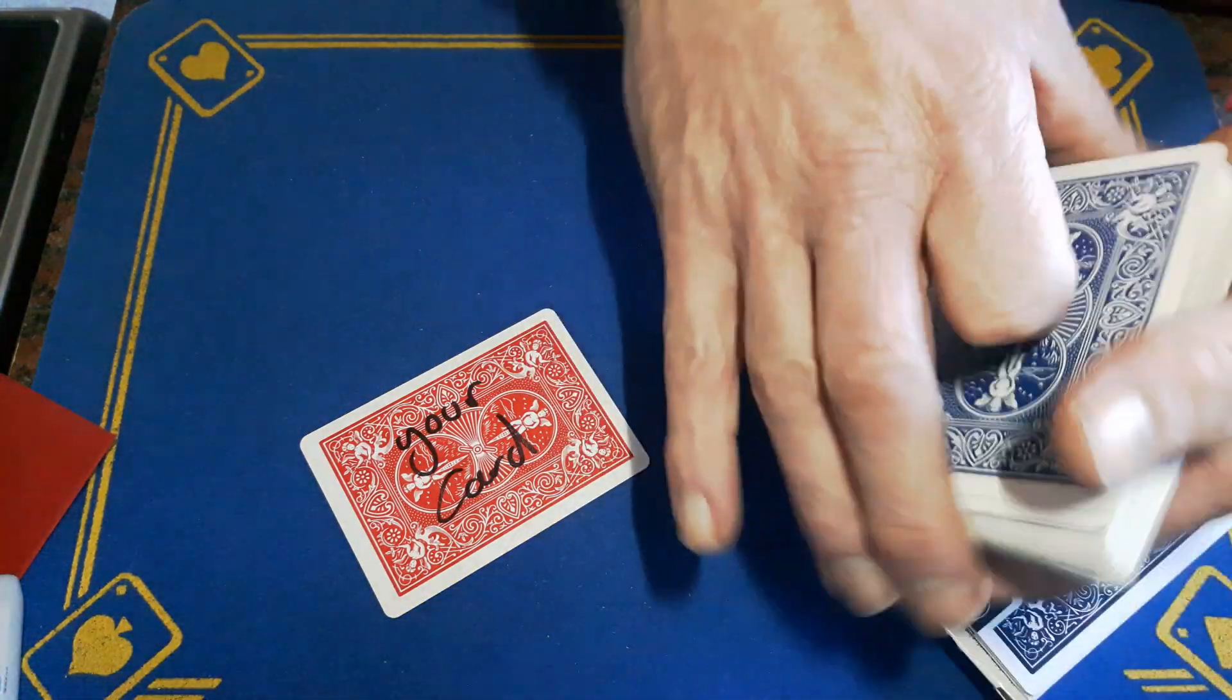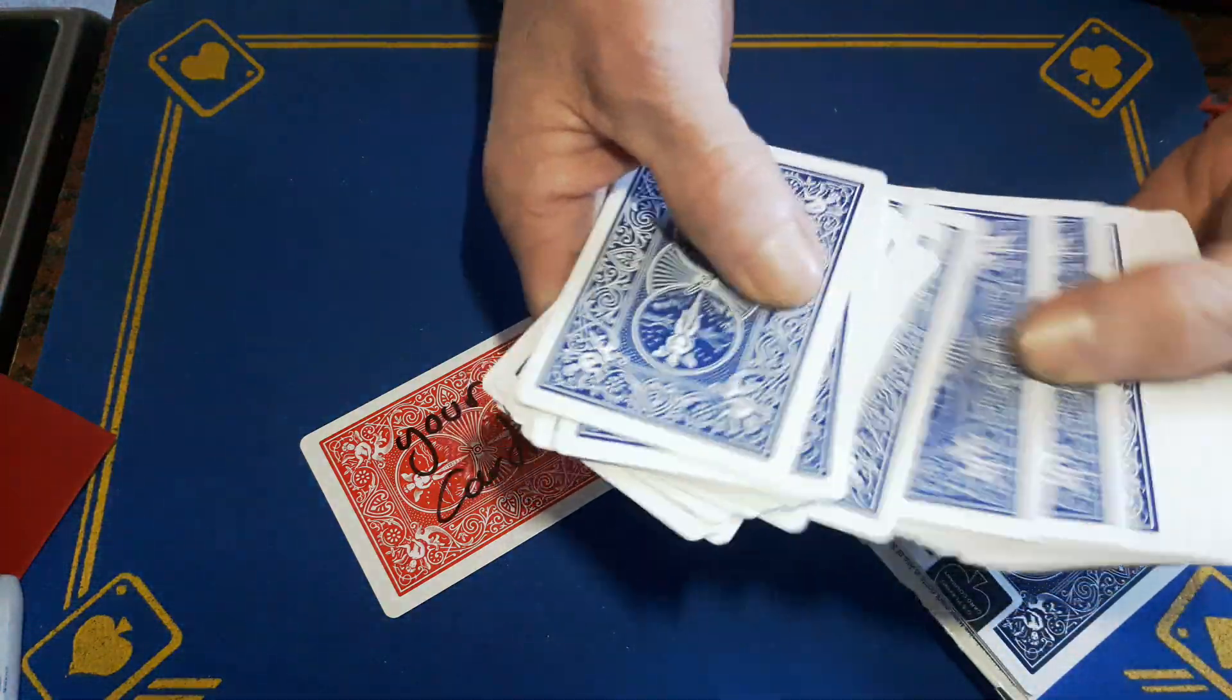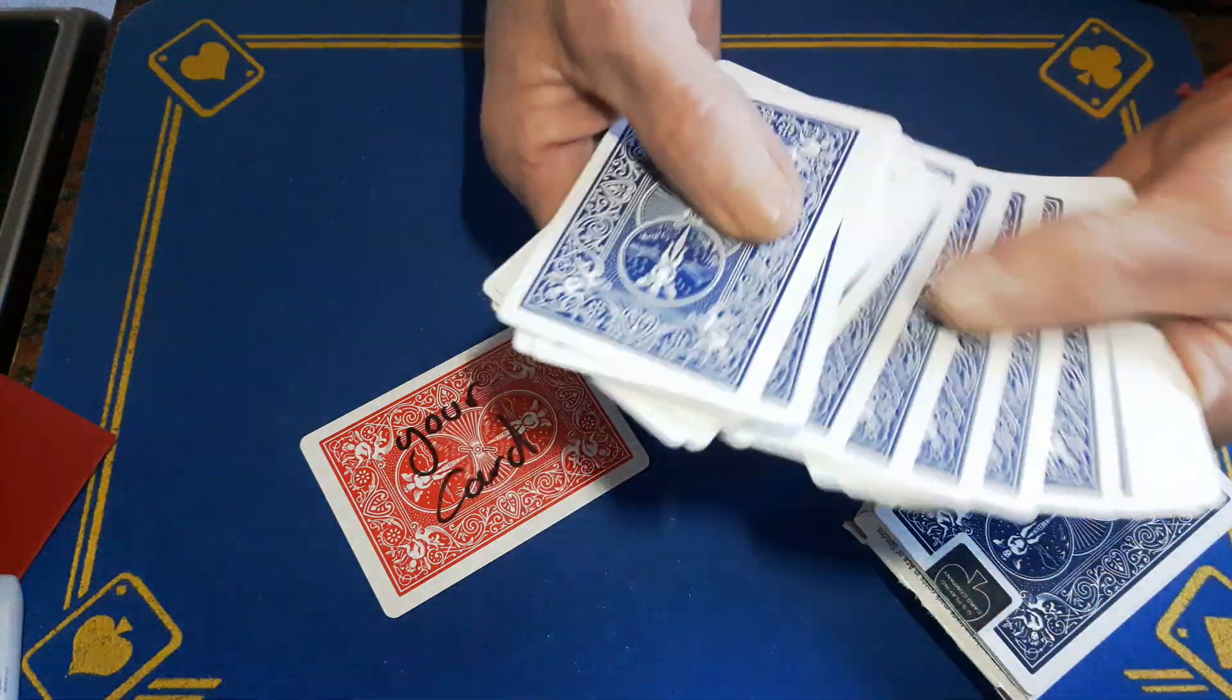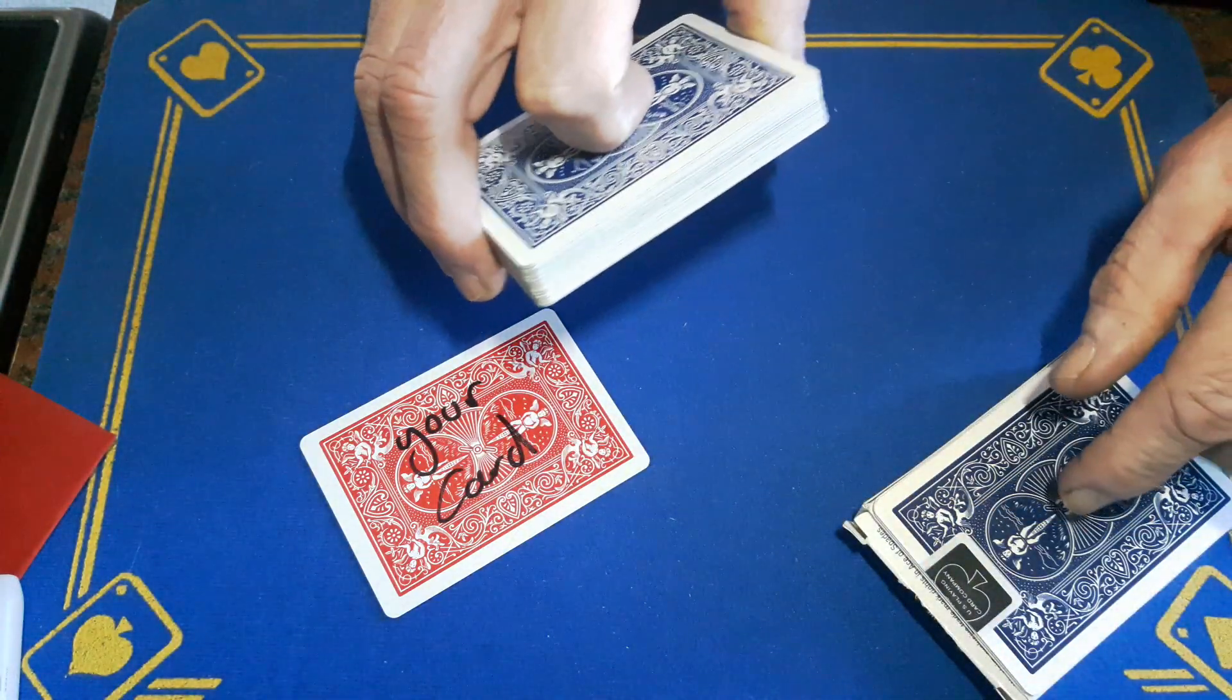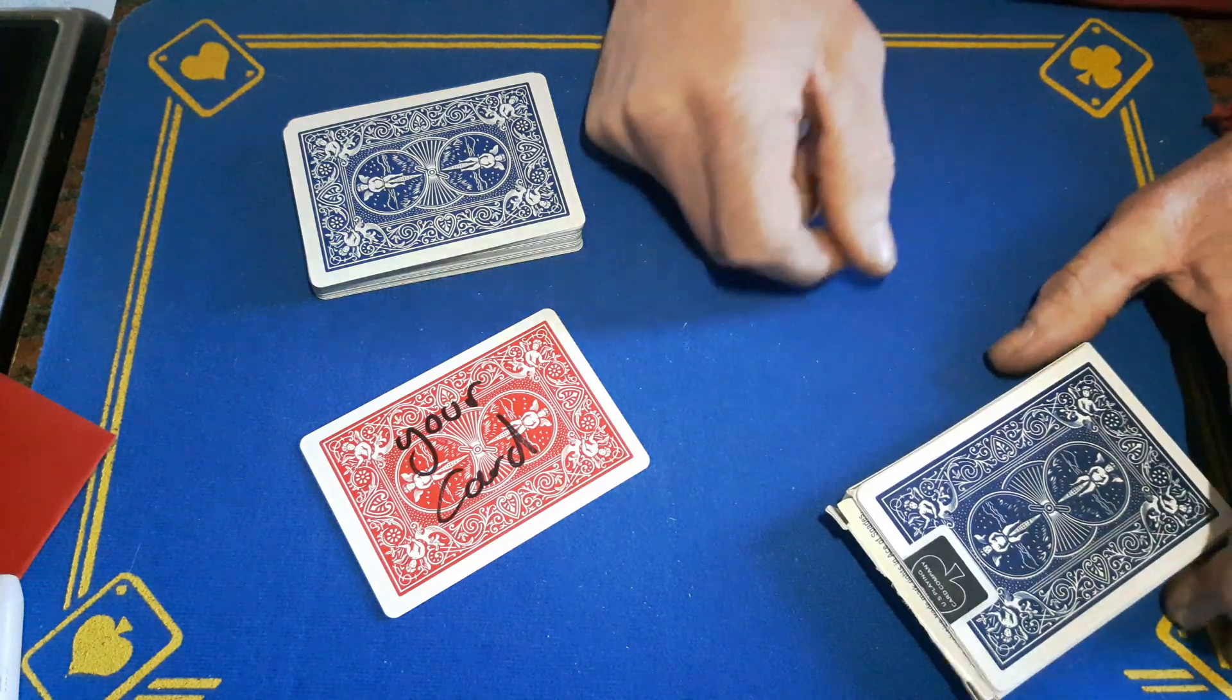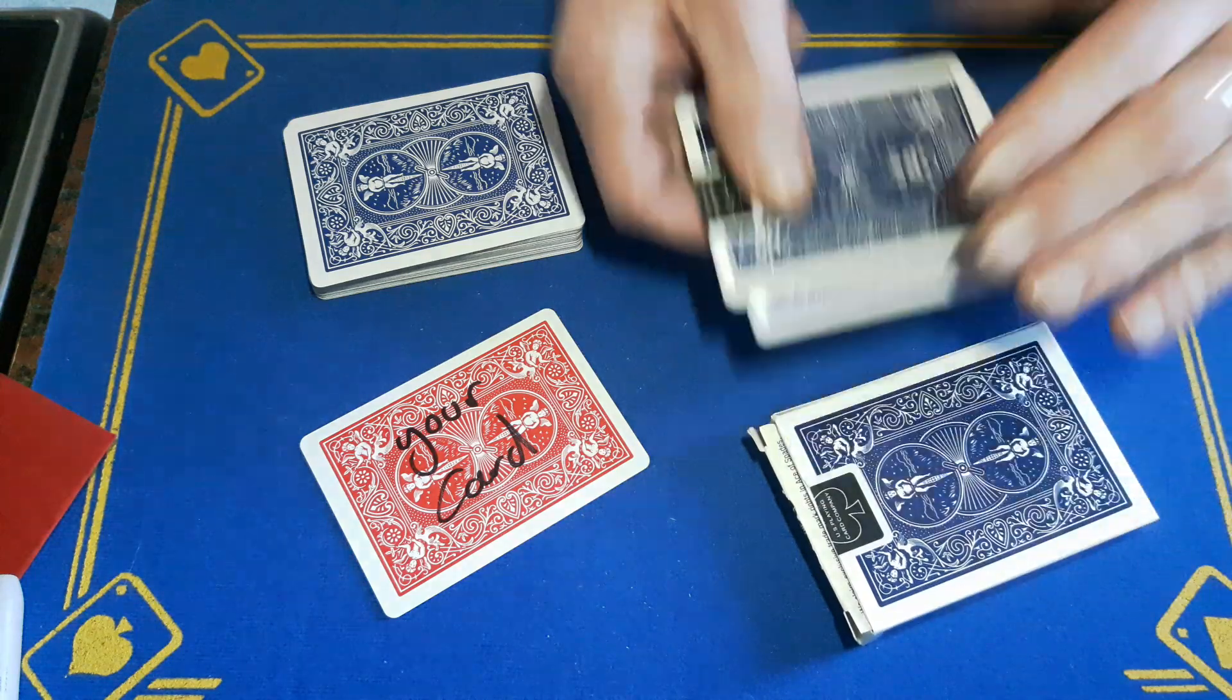And now you can get them to go through these cards to look for the other red back card. Now there is no other red back card because that is it there. Because the bottom of the box is quite a good gaff, because you've got this sticker on there, it does look like the bottom of the box.